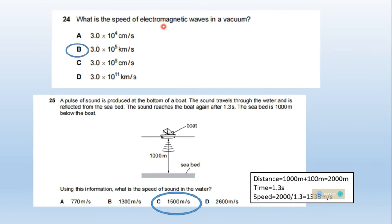What is the speed of electromagnetic waves in a vacuum? Electromagnetic waves travel with the speed of light, which is 3 times 10 to the power 8 meters per second. In kilometers per second it will be 3 times 10 to the power 5 kilometers per second.